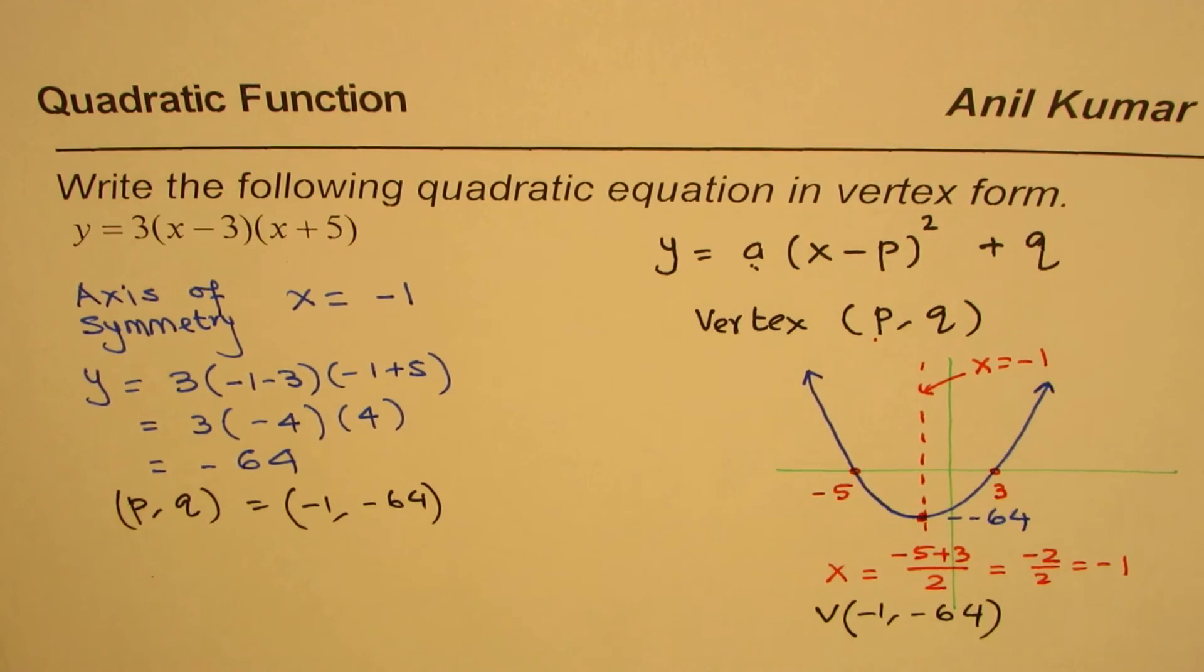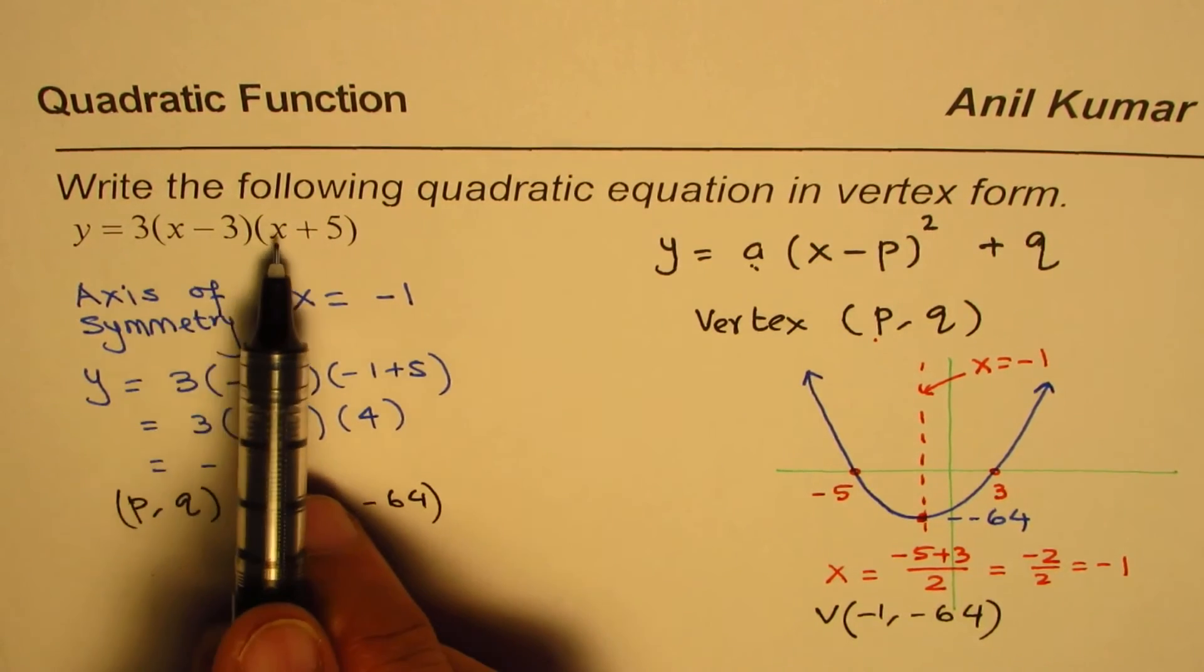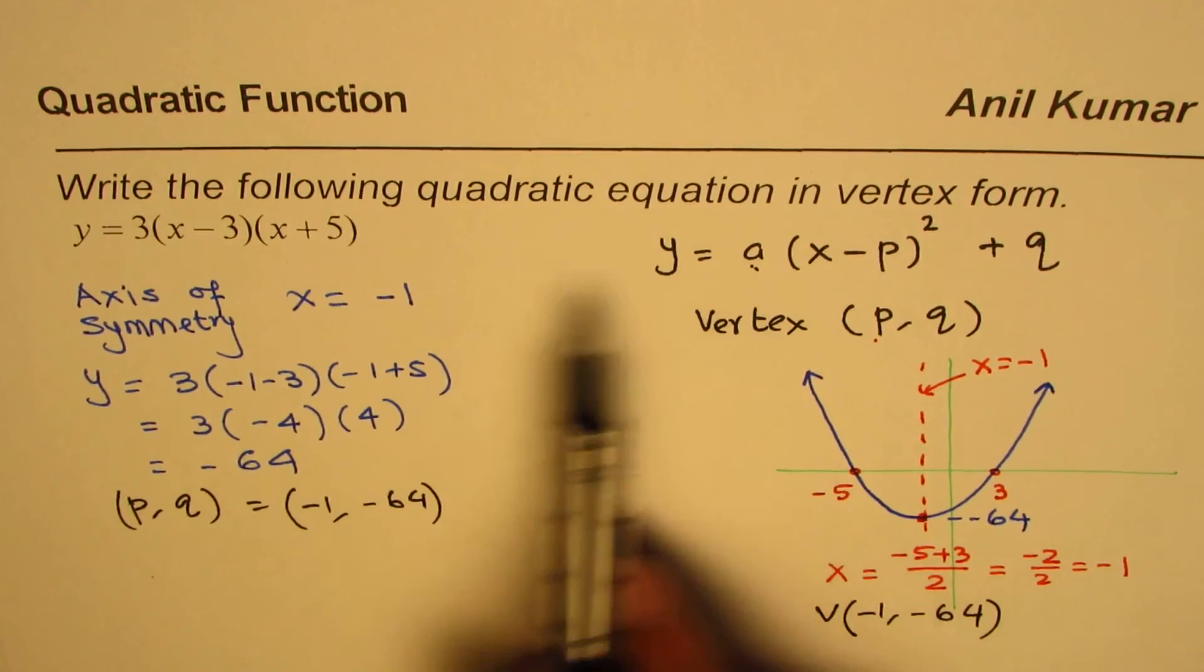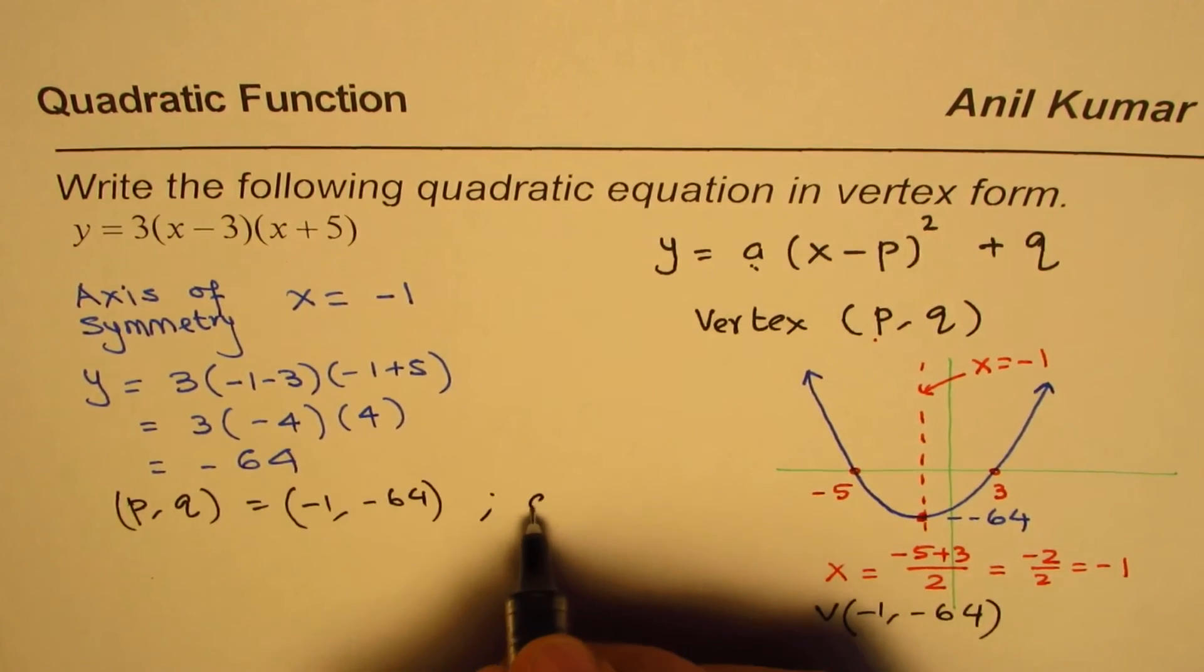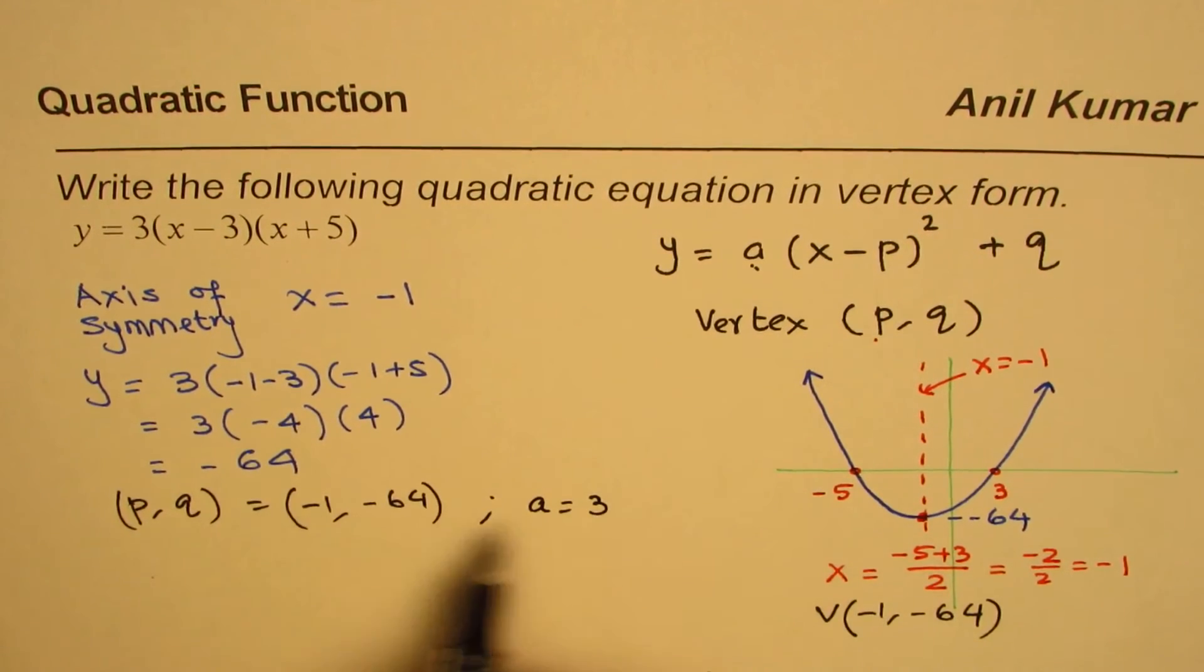And a is 3. You can compare the two equations. So when you multiply x and x you get x squared times 3. So that is a, so we know that a equals 3.